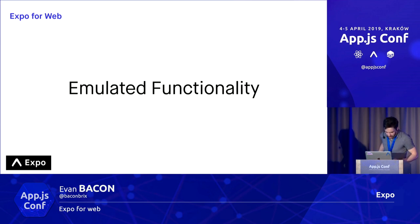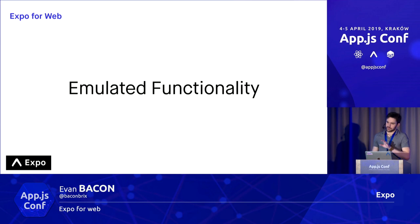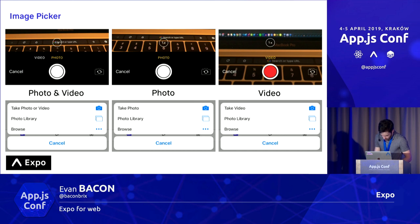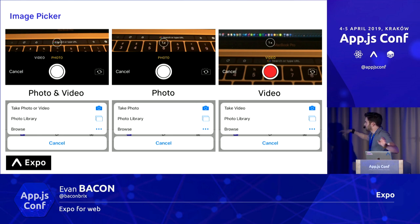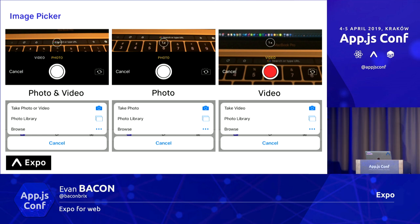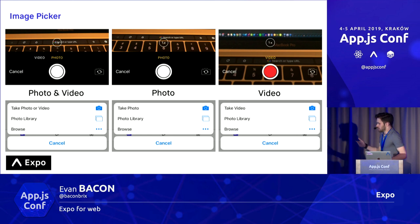The next category is emulated functionality — functionality which exists natively in the browser, but works a little differently than it does natively on mobile. We just try to match it as closely as possible. Image picker is a great example. With the image picker API in web, you can call launch camera async and specify whether you want just photos or videos. A lot of these features work very differently across browsers, so it's convenient to have them wrapped up in one ubiquitous API.